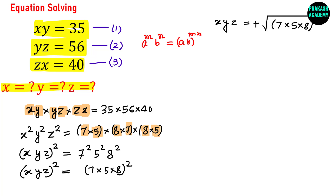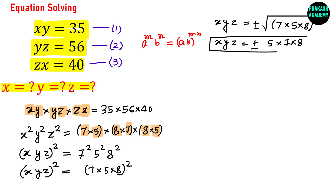From here you can see that XYZ is equal to the square root of (7×5×8)², giving plus or minus (7×5×8). So XYZ equals plus or minus 280. Now that I know the product XYZ, I can use any one of the equations to find the possible values of each variable.